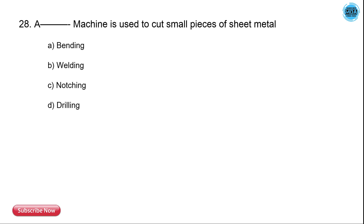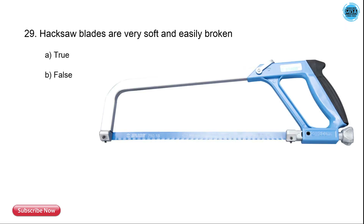The next question is: which operation is used to cut the small pieces of sheet metal? The options are bending, welding, notching, and drilling. The correct answer is notching — notching is used to cut small pieces of sheet metal.